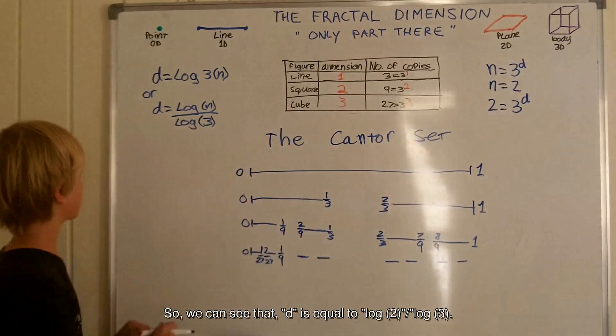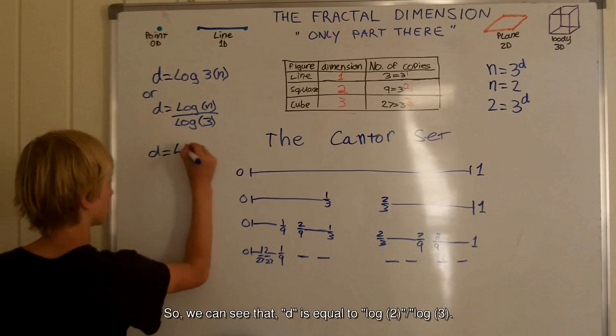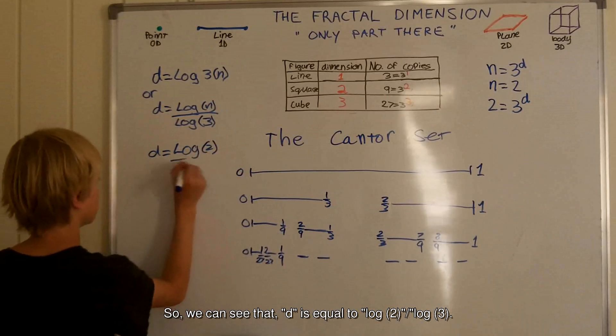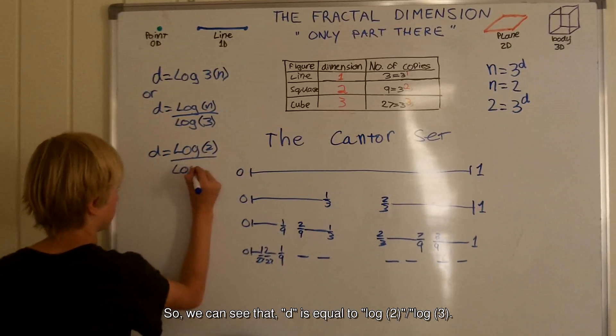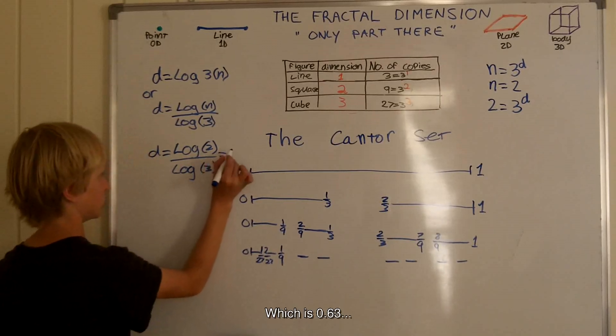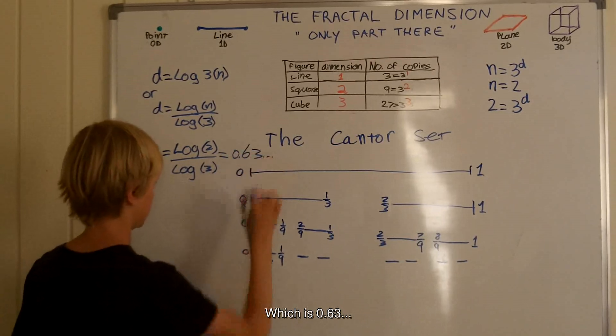We can see that d is equal to log 2 divided by log 3, which is 0.63, etc.